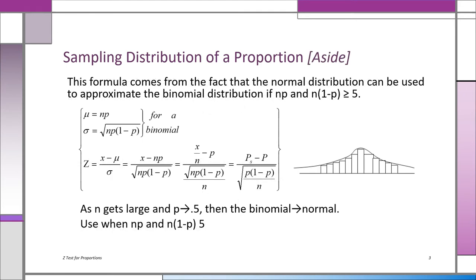The sampling distribution of a proportion should be binomially distributed — it's two states, success or not, with probability p and 1 minus p. That obviously follows the binomial distribution. However, as n gets large, and n times p and n times 1 minus p are both at least 5, the distribution gets approximately very close to a bell-shaped normal distribution, and z becomes a very good approximation for the sampling distribution of a proportion.